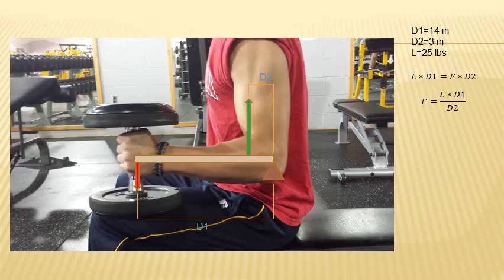After substituting in the known values and solving for f, we find that Greg's bicep is actually pulling up with 117 pounds of force.